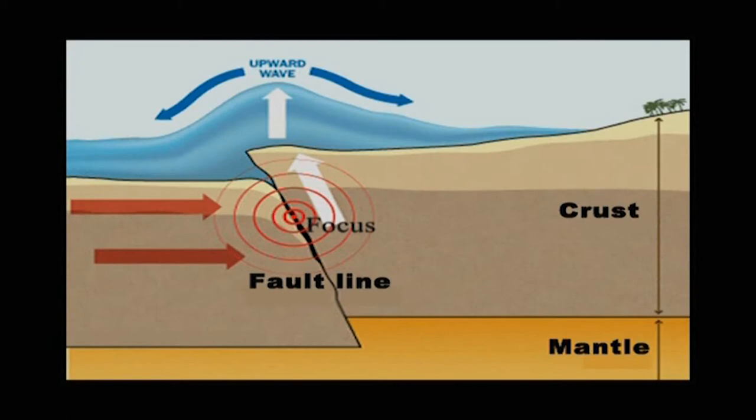In other words, an earthquake is a vibration or oscillation of the surface of the earth caused by the transient disturbance of the elastic or gravitational equilibrium of the rocks beneath the earth's surface.